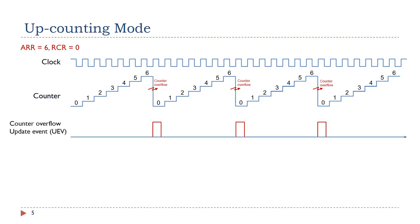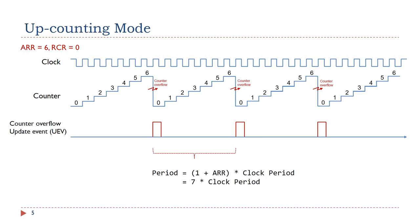In the up-counting mode, when the counter has reached 6, it rolls over and is reset. When the counter resets, it triggers a counter overflow and an update event, after which a new period starts. The counting period is determined by the auto-reload value as well as the clock period. Specifically, the PWM period equals (1 + ARR) times the clock period.